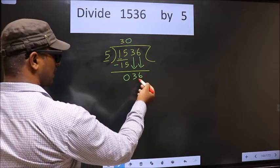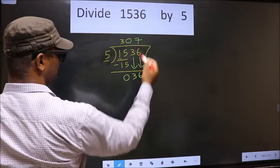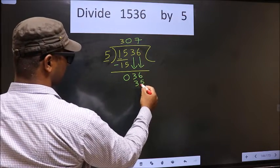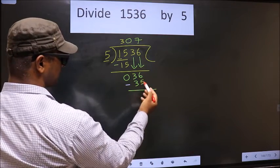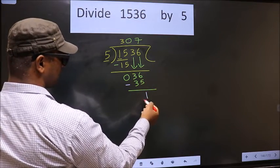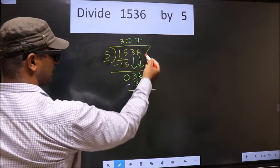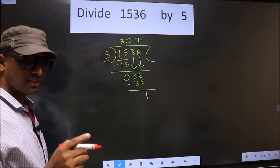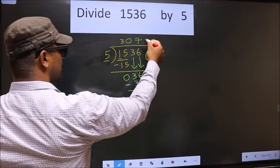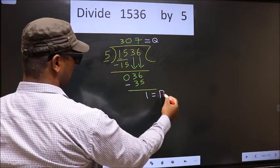Here 36. Here 36. A number close to 36 in 5 table is 5 times 7, 35. Now you subtract. 36 minus 35 is 1. 1 is smaller than 5. No more numbers to take down, so this is where we stop. Therefore, this is our quotient and this is our remainder.